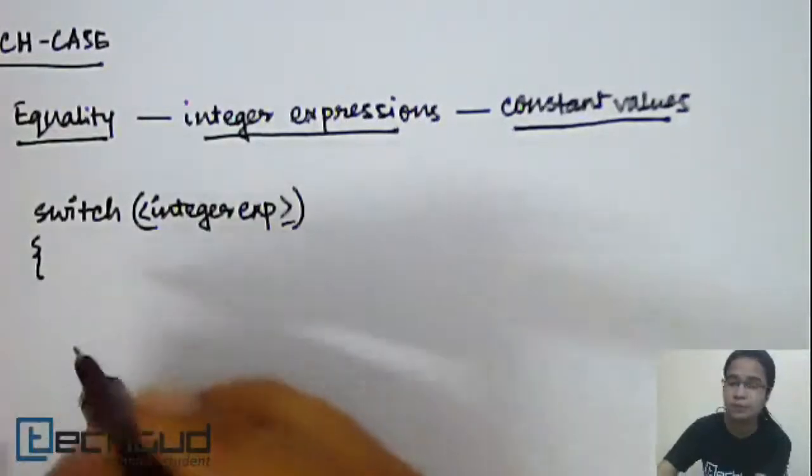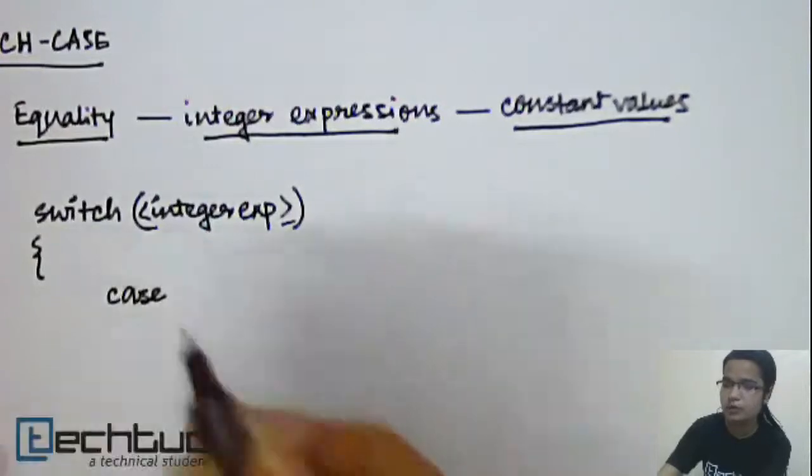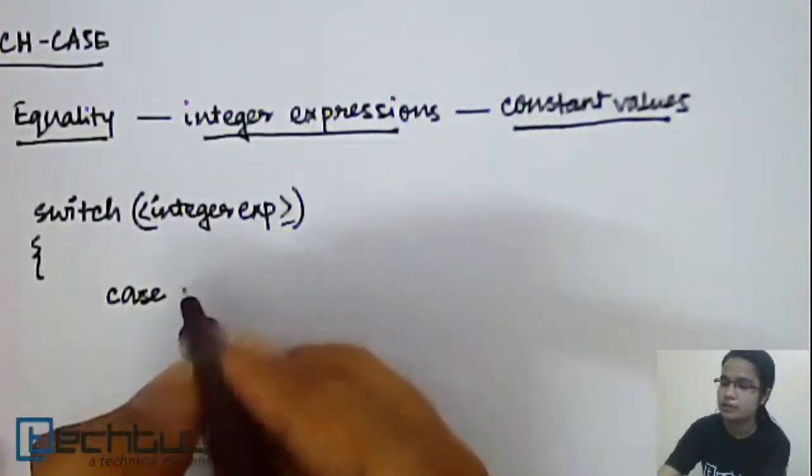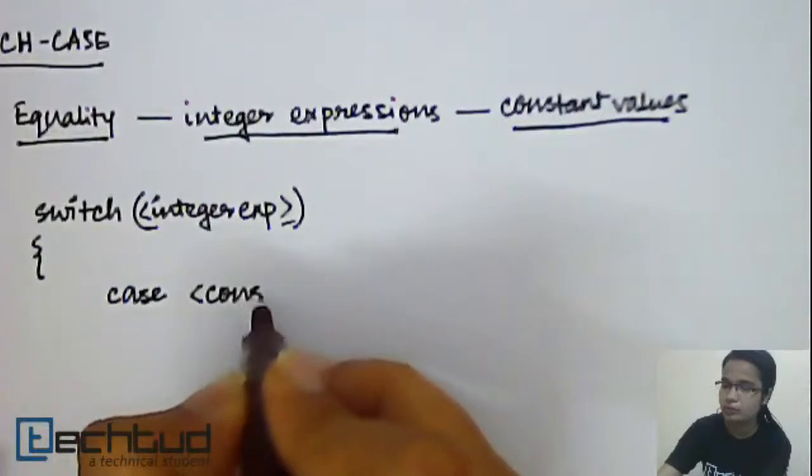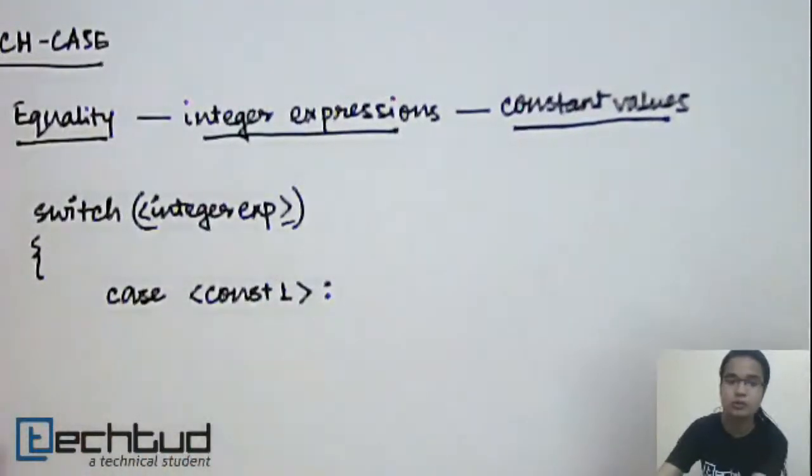So then within a pair of braces, we need to write the different cases. So first case, here we need to write some constant value, may be constant 1, then a colon sign.